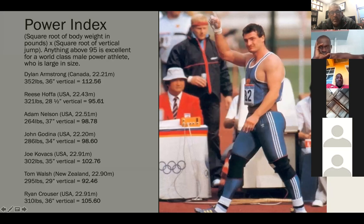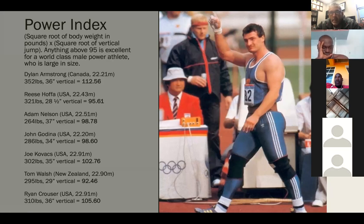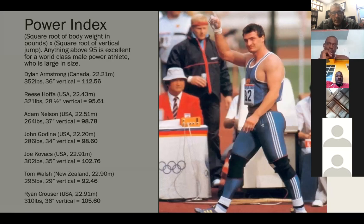Your average good 22-meter-plus shot putter is usually around 95 to 98 — that's what Nelson, Godina, and Hoffa were. The lowest power index here is Tom Walsh at 92.46, mainly because of a lower vertical leap. He kind of makes up for it with quickness and agility in his technique. On the women's side, the top throwers in the world are probably going to have power indices between about 82 and 88. A good national-level shot putter — like a 20-meter thrower on the men's side — is going to have a power index of about 90 or 91.